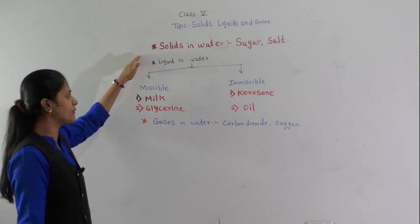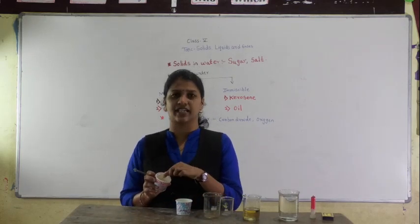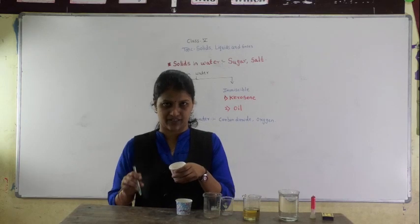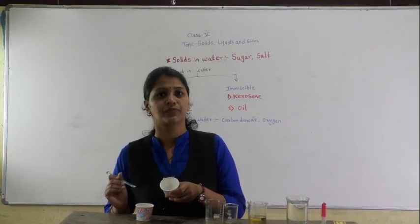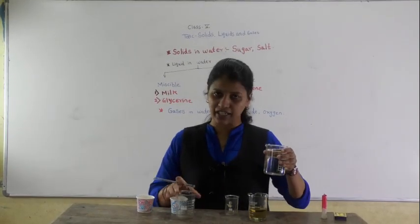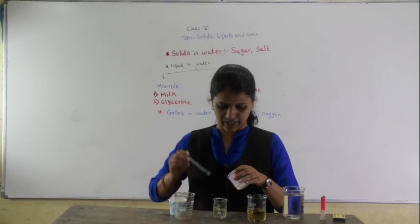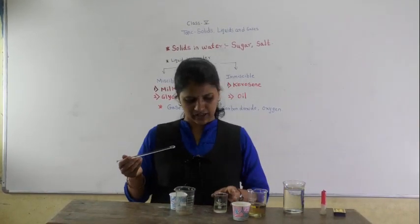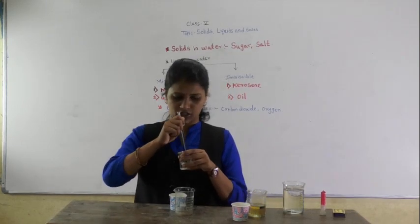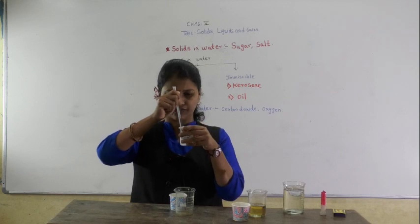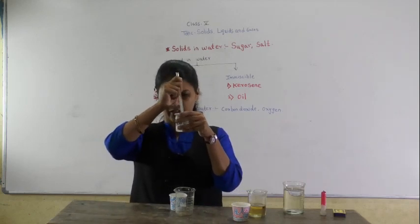Now let us perform the activity. I am going to show solid in water and liquid in water. This is sugar which is in solid state, and this is salt which is in solid state. I will take some water in the beaker and add some sugar in it. Now you will see some sugar content. I will stir it and let's see whether it dissolves in water. We have to stir until all the molecules of the sugar are dissolved in the water.